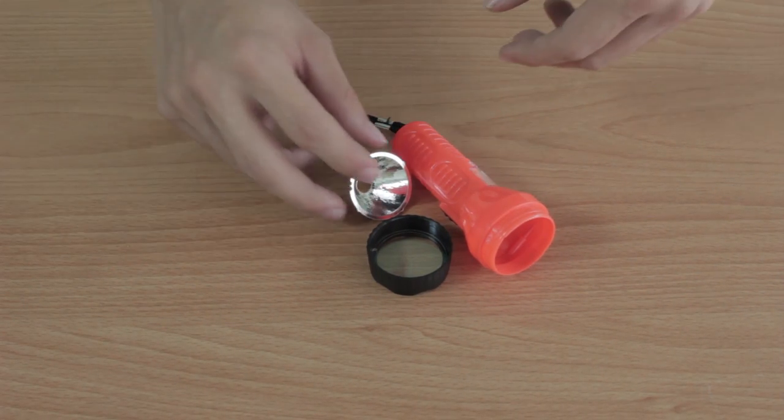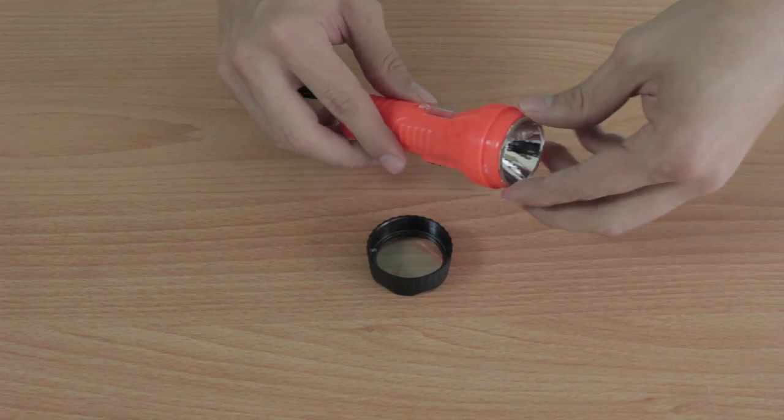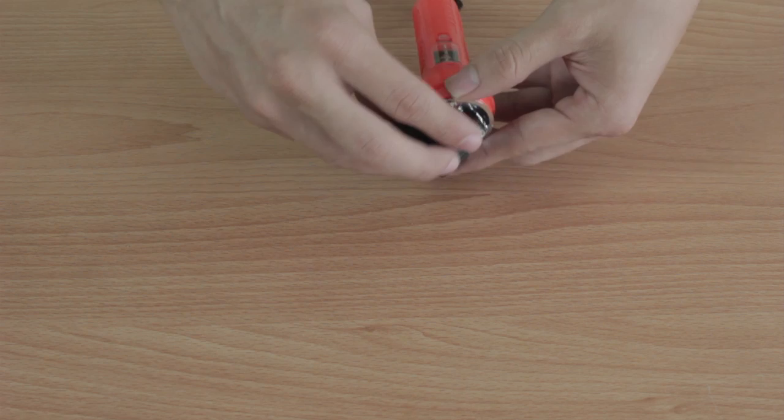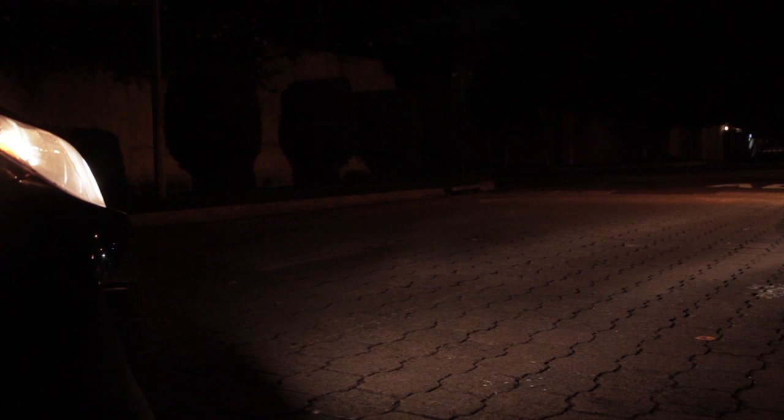Análogamente, una fuente emisora que se coloque en el foco envía un haz de rayos que son paralelos al eje de la parábola. Este principio se ocupa en algunas lámparas, faros que tienen espejos parabólicos que reflejan los haces de luz paralelos emitidos de una fuente en posición focal.